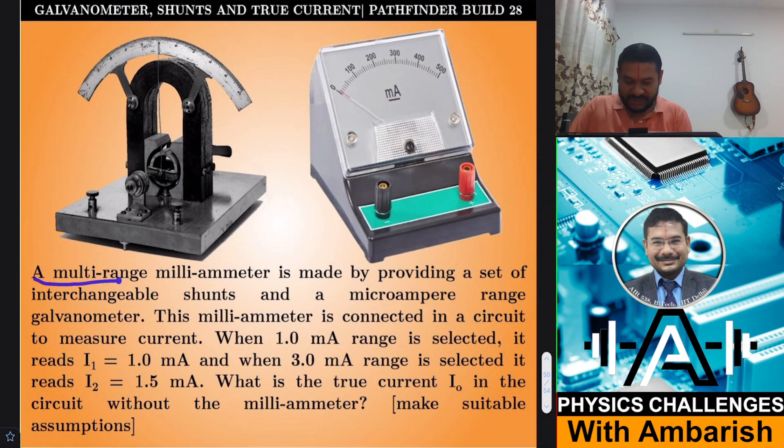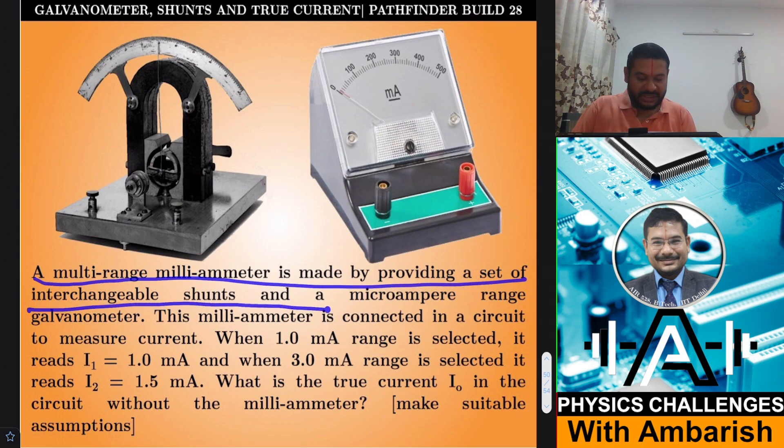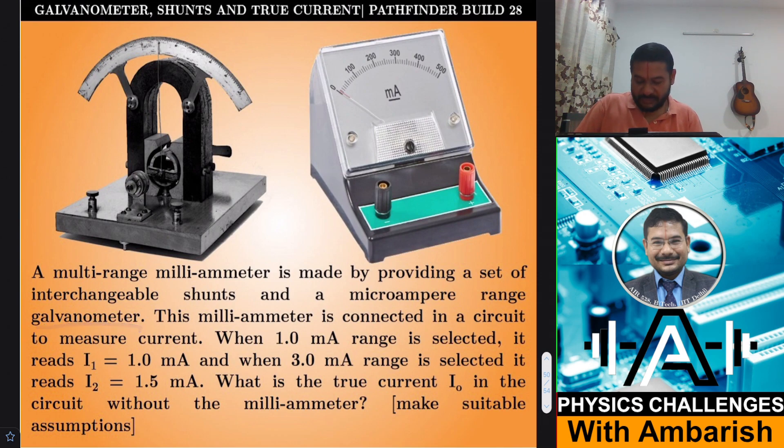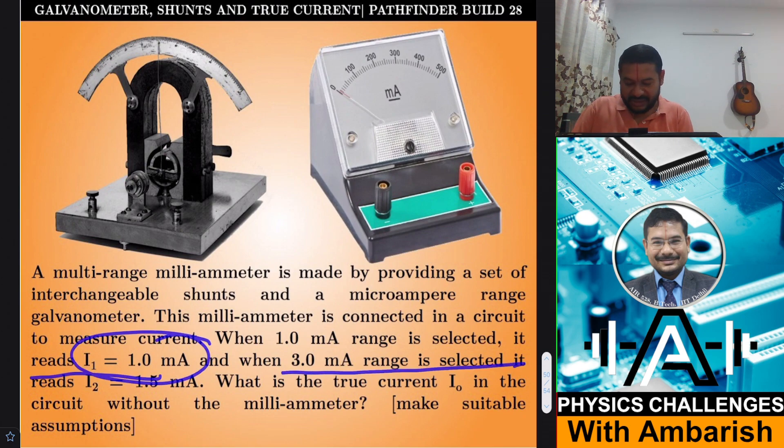A multi-range milliampere meter is made by providing a set of interchangeable shunts and a microampere range galvanometer. This milliampere meter is connected in a circuit to measure current. When 1 milliampere range is selected it reads I1 equals 1 milliampere and when 3 milliampere range is selected it reads I2 equals 1.5 milliampere.